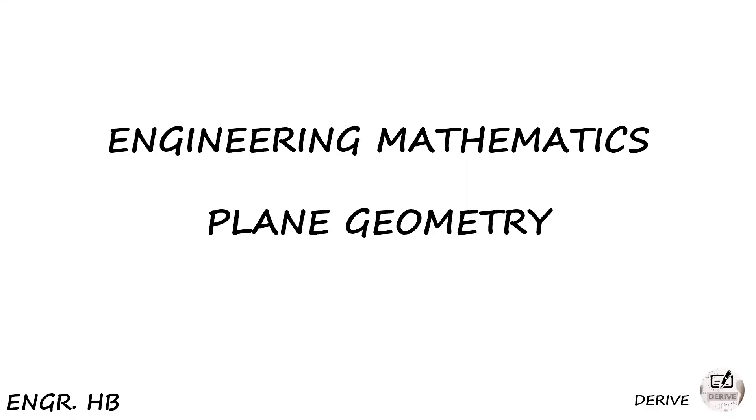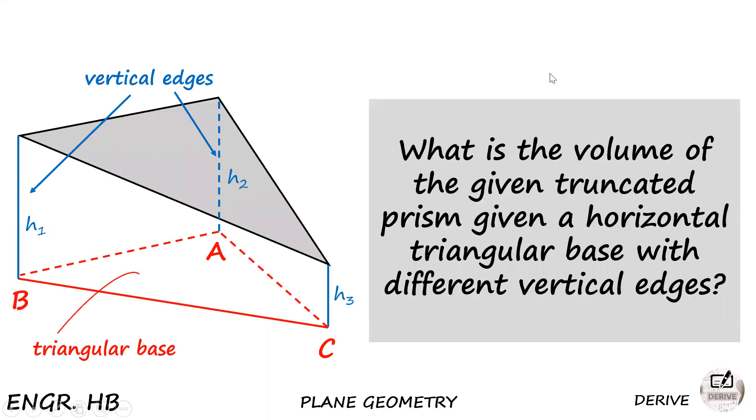Hi guys, welcome to Derive. In today's video we're going to answer a problem in engineering mathematics with the topic of plane geometry. Let us proceed to the question. We have a figure here of a truncated prism, and the question is: what is the volume of the given truncated prism given a horizontal triangular base with different vertical edges designated by sides A, B, and C?